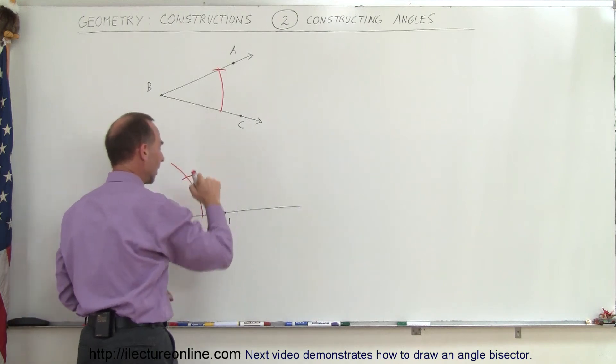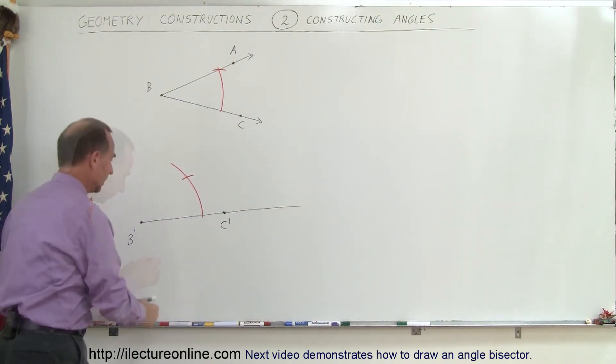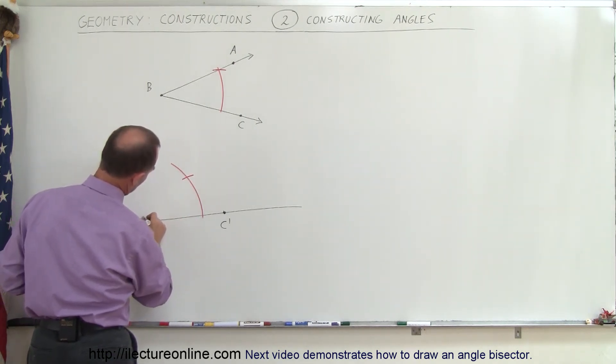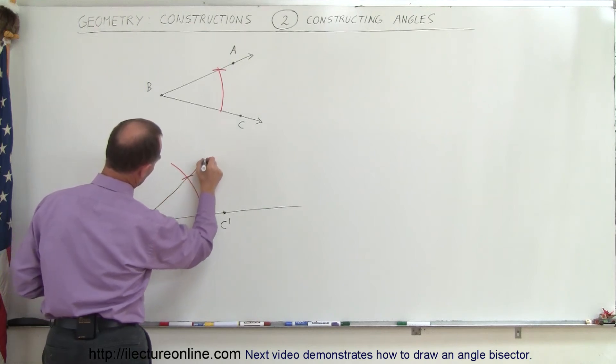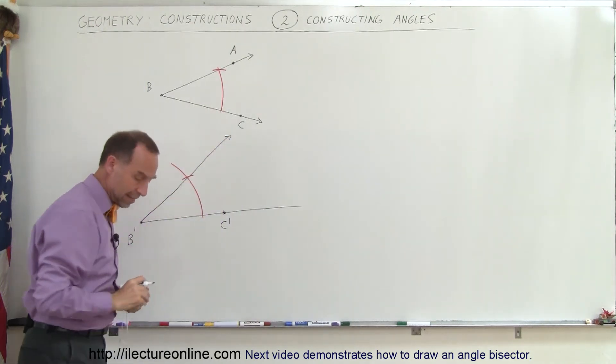So I'm ready to do that. So draw a straight line from B' to that location right there. And that would then be the extension to A. So now I want to find my A'.